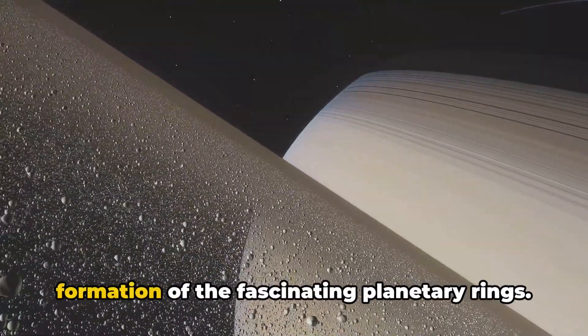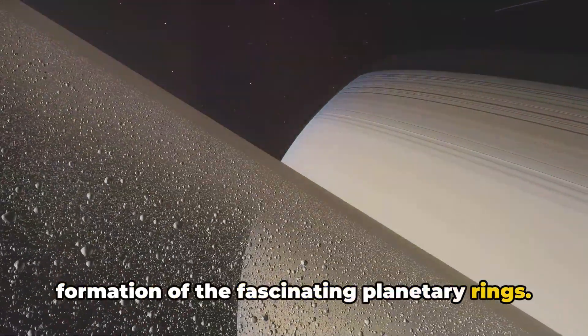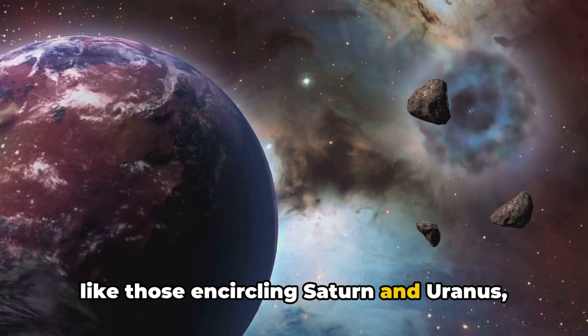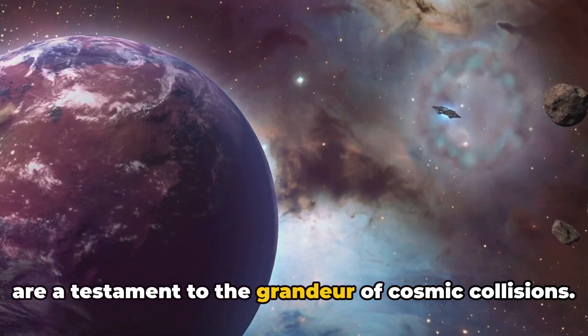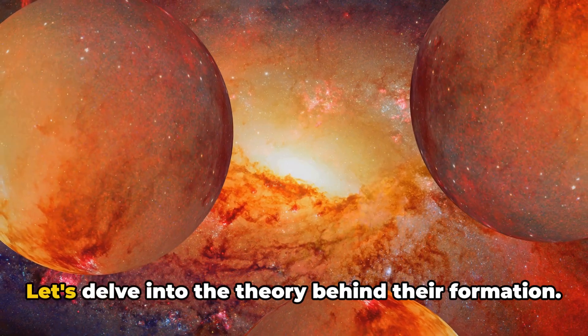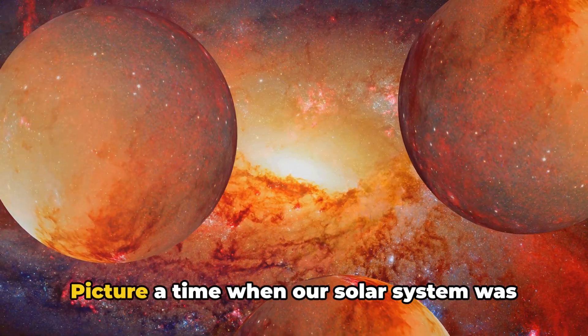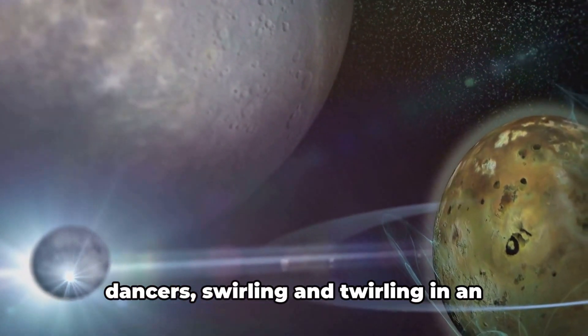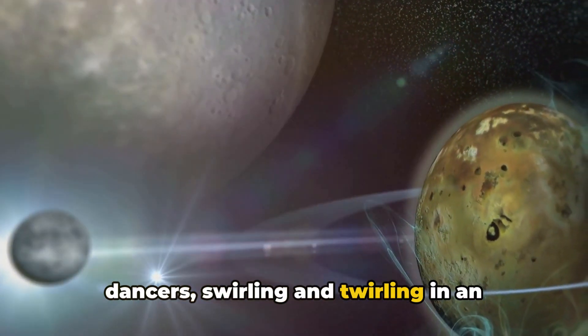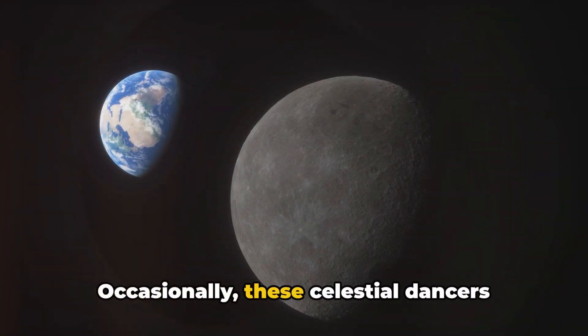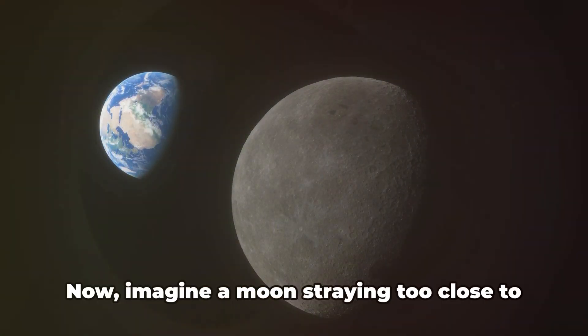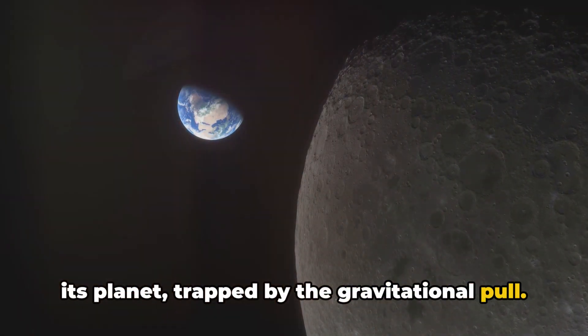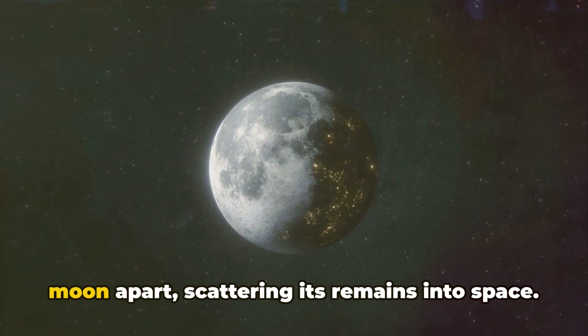Next up, at number four, we have the formation of the fascinating planetary rings. These celestial belts of dust and debris, like those encircling Saturn and Uranus, are a testament to the grandeur of cosmic collisions. Let's delve into the theory behind their formation. Picture a time when our solar system was young and chaotic. Planets and their moons were like dancers, swirling and twirling in an unpredictable ballet. Occasionally, these celestial dancers would collide. Now imagine a moon, straying too close to its planet, trapped by the gravitational pull. The planet's tidal forces would rip the moon apart, scattering its remains into space.